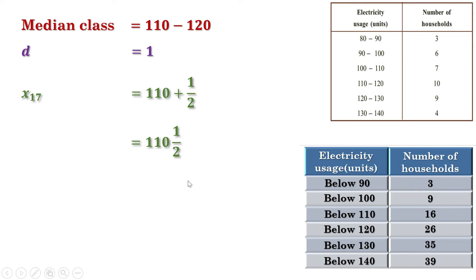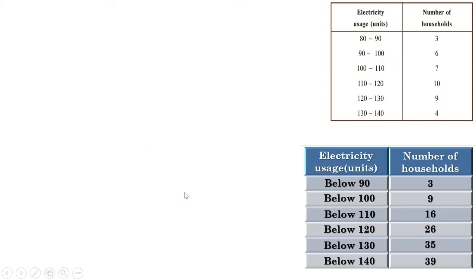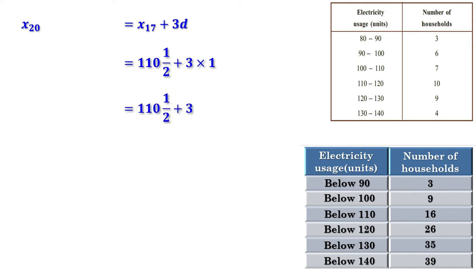Now we know the 20th term is the middle term, therefore it is the median. The 20th term is the 17th term plus 3 times the common difference. The 17th term is 110 and a half and common difference is 1. So this is 110 and a half plus 3 into 1, which is 110 and a half plus 3, equal to 113 and a half. That means the median is 113 and a half.